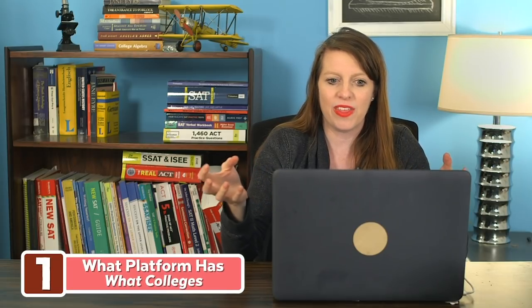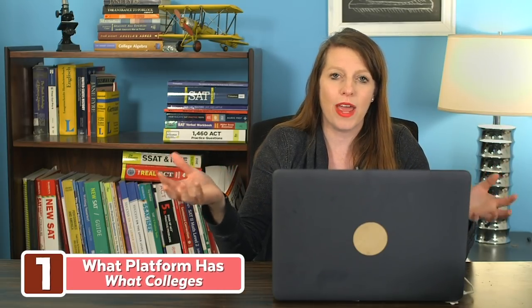Not every school is on coalition and not every school is on common app. With 891 schools, common app has way more college options. However, there are some notable schools not on the common app at all that are on the coalition app: University of Texas, University of Illinois Champaign-Urbana, and Clemson University. If you happen to be applying to these and all your other schools are also on the coalition app, you may be able to get away with just doing the coalition app, which could save you some time.